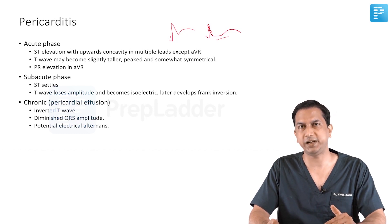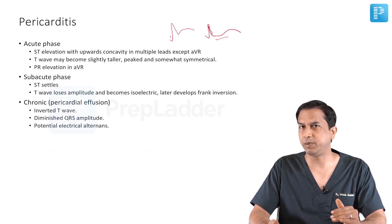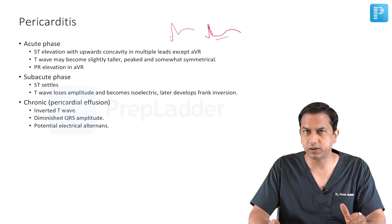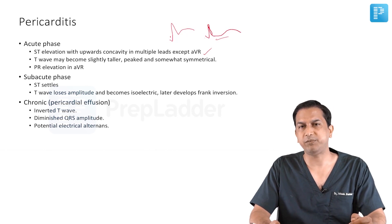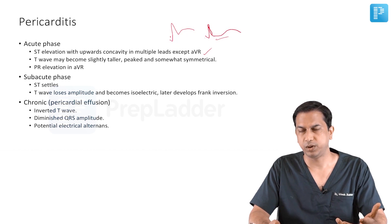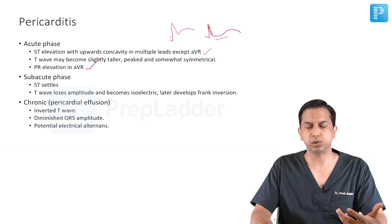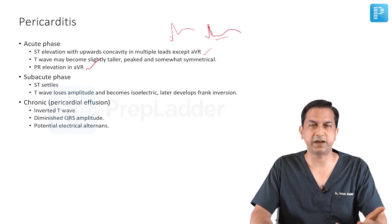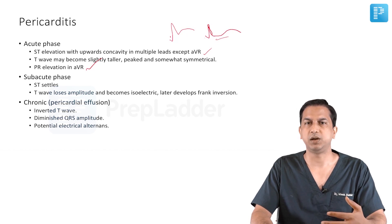It can be in the territory of LAD as well as RCA, and it can be present in almost all leads except AVR where there will be ST depression. The T wave becomes slightly taller, peaked, and somewhat symmetrical — a kind of hyperacute T wave. The PR elevation is present in AVR, which is an indicator of atrial involvement or atrial inflammation, so the axis of the atrial deflection will be towards AVR.